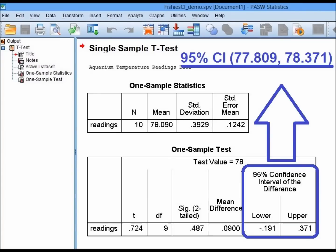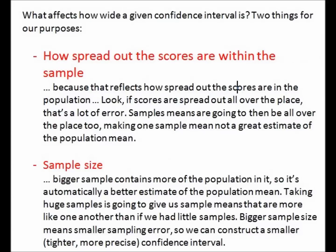A confidence interval can be wide or tight. A tight confidence interval — like what I have here, close to 78 — makes me feel good that the real temperature overall is close to 78. But it could be really wide: I could have a mean of 78.09 but scores all over the place.